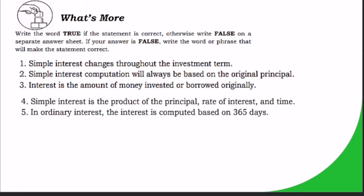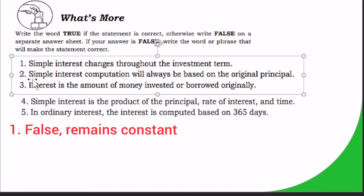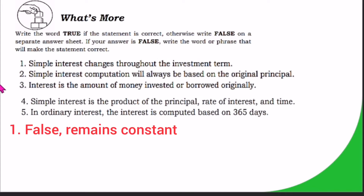Activity 1.1: Write the word TRUE if the statement is correct, otherwise write FALSE on a separate answer sheet. If your answer is false, write the word or phrase that will make the statement correct. Number 1: Simple interest changes throughout the investment term — FALSE; it remains constant. Number 2: Simple interest computation will always be based on the original principal — TRUE.